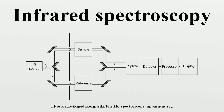The infrared spectrum of a sample is recorded by passing a beam of infrared light through the sample. When the frequency of the IR is the same as the vibrational frequency of a bond, absorption occurs. Examination of the transmitted light reveals how much energy was absorbed at each frequency. This can be achieved by scanning the wavelength range using a monochromator, or the whole wavelength range is measured at once using a Fourier transform instrument, generating a transmittance or absorbance spectrum. Analysis of the position, shape, and intensity of peaks reveals details about the molecular structure of the sample.